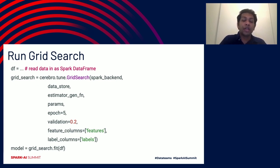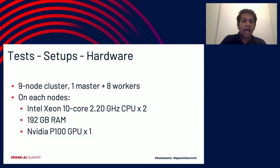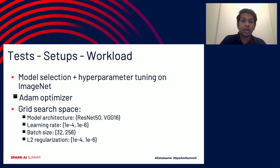During model selection, you can visualize the training progress of all the models using TensorBoard or MLflow. For the experimental setup, I use a nine-node cluster with one master node and eight worker nodes. Each node has an Intel Xeon processor, 192 gigabytes of RAM, and one NVIDIA P100 GPU. As the experimental workload, I use the same ImageNet workload with Adam as the optimizer, and explore two different values for L2 regularization, essentially generating 16 different model configurations.